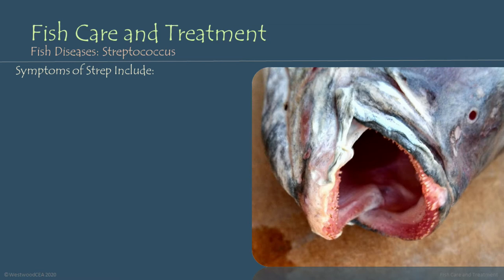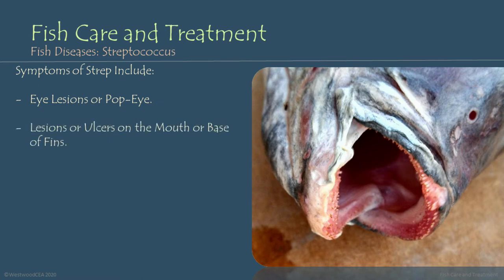There are a few visible symptoms of Streptococcus infections that you're going to want to keep an eye out for, particularly if you do start to see some of your fish population dying off and you can't really tell what it is. As a Streptococcus infection moves through your fish population, some individuals might express it in the form of eye lesions or what's called Popeye, where the eyes are actually bulging farther out of their sockets than normal. Additionally, fish may develop lesions or ulcers around their mouth, the base of their fins, and around their anus. Another common symptom is a reddening of the genitals.